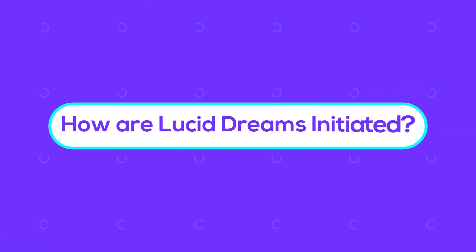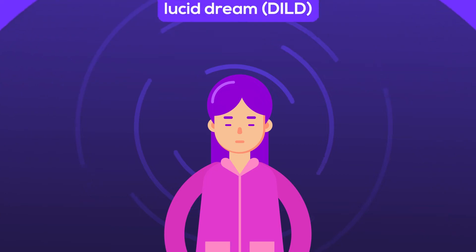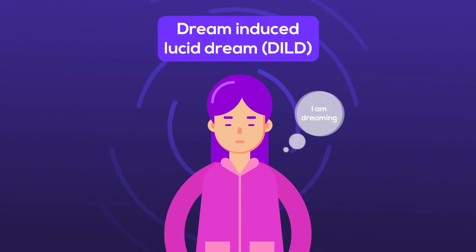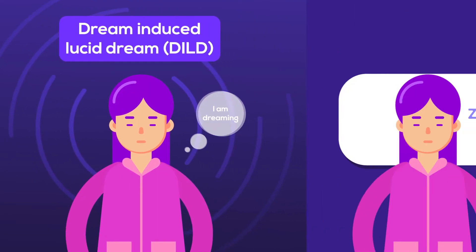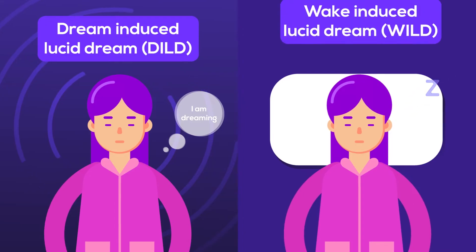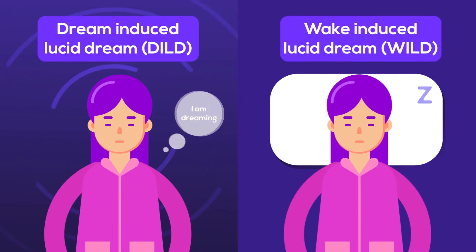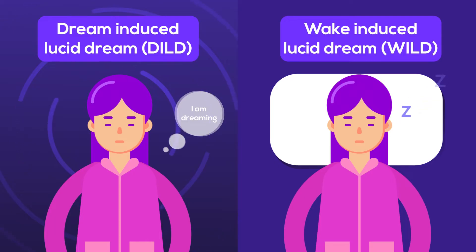How are lucid dreams initiated? There are two means of initiating a lucid dream. The first is a dream-induced lucid dream, or DILD — this is when something within the dream triggers the dreamer to understand that they are dreaming. The second is a wake-induced lucid dream, where the dreamer moves from a state of wakefulness to dreaming with no loss of awareness.